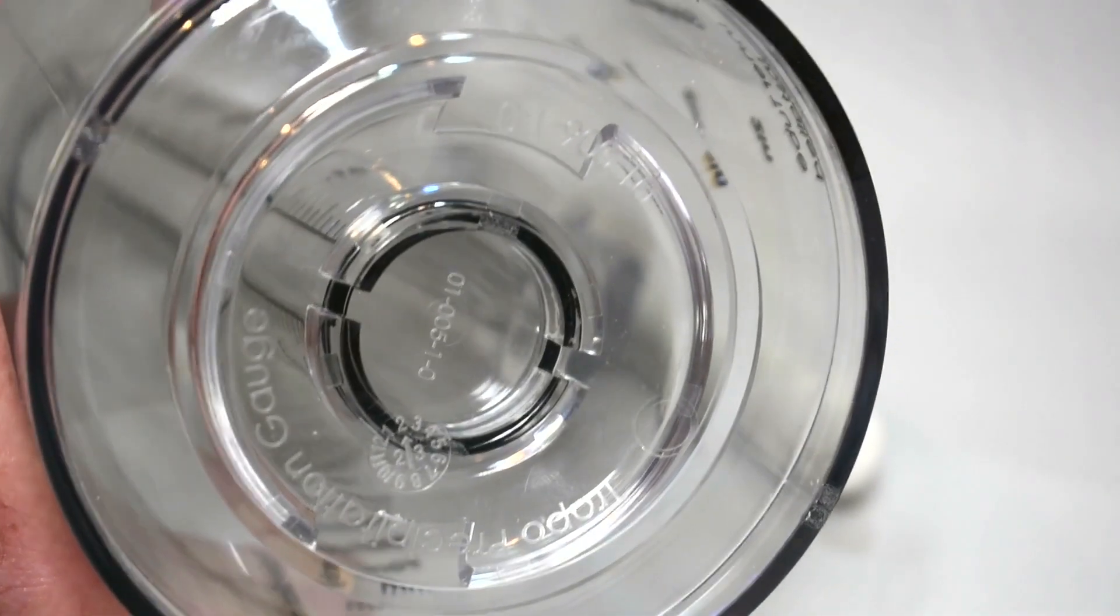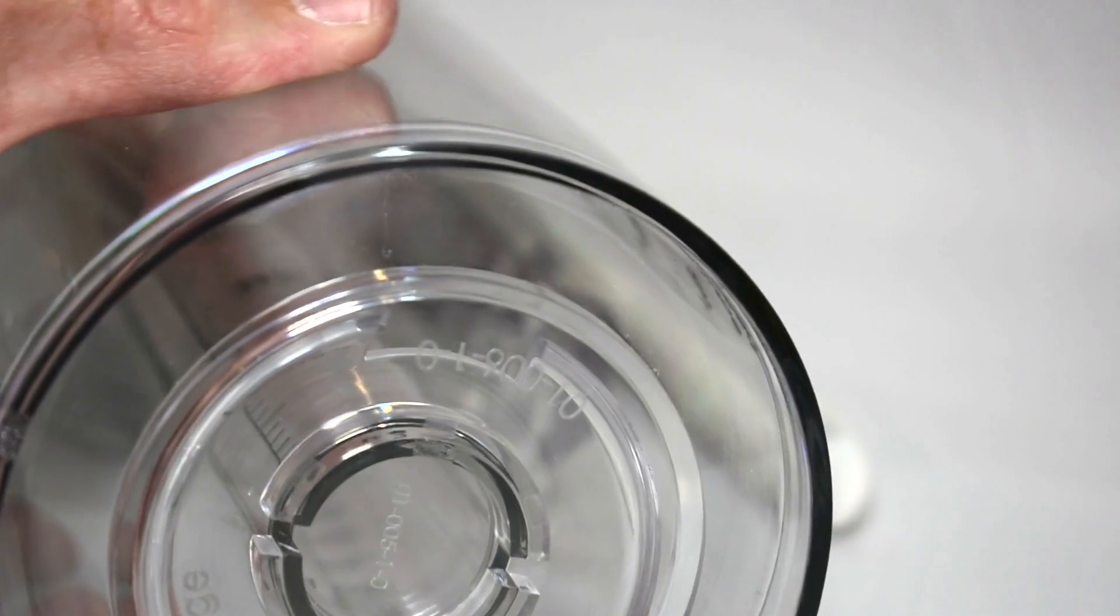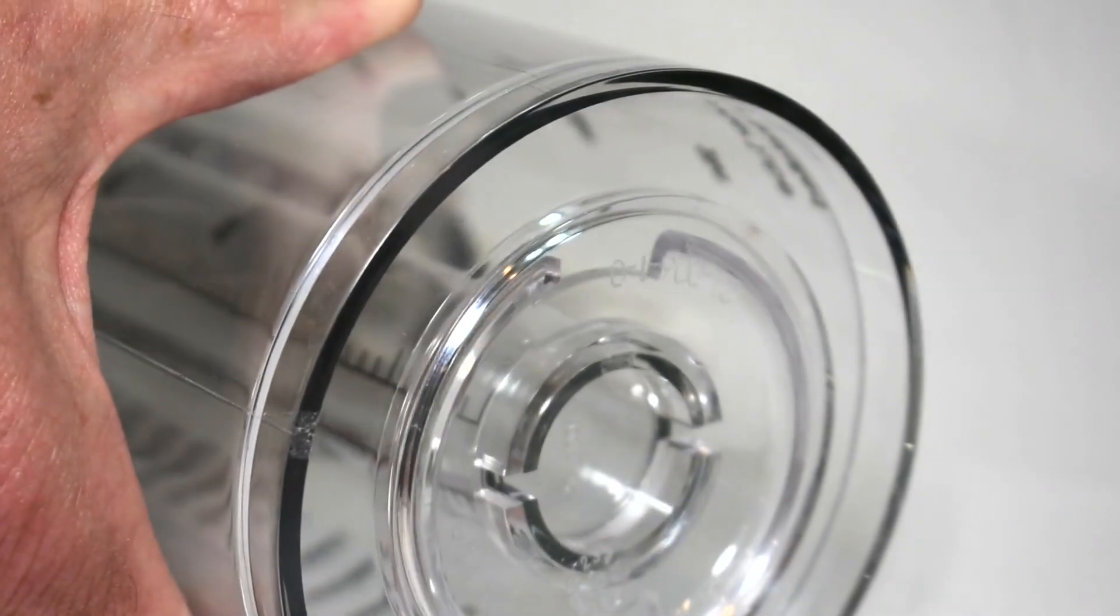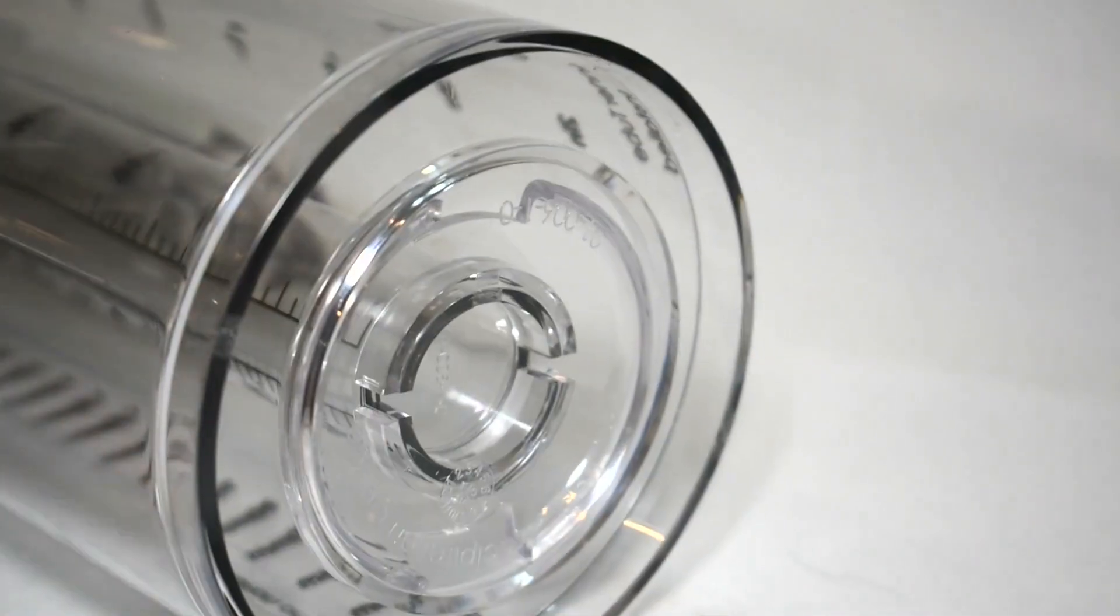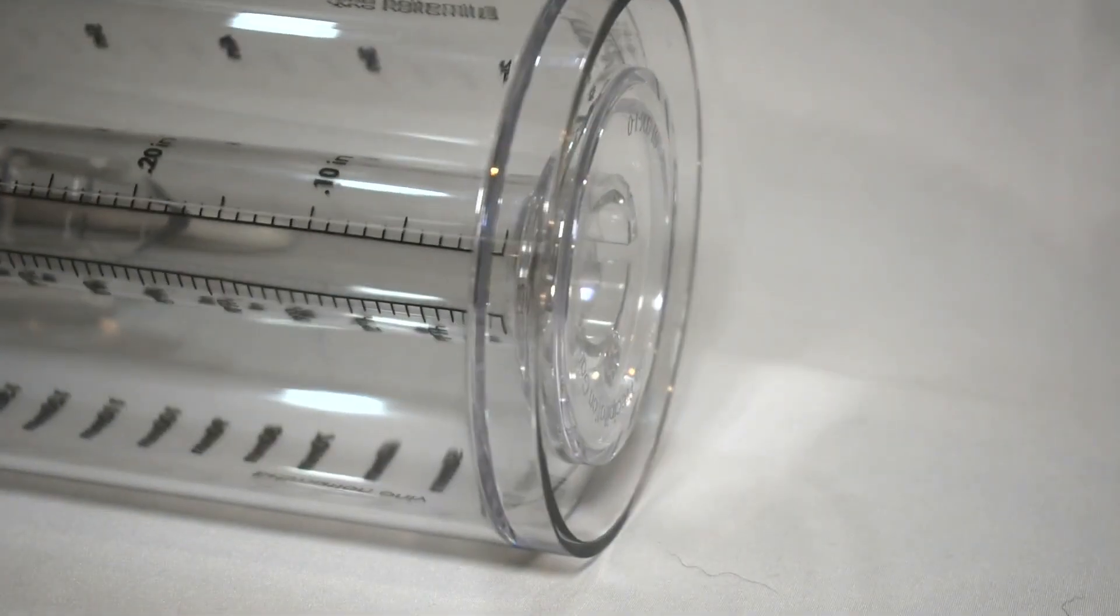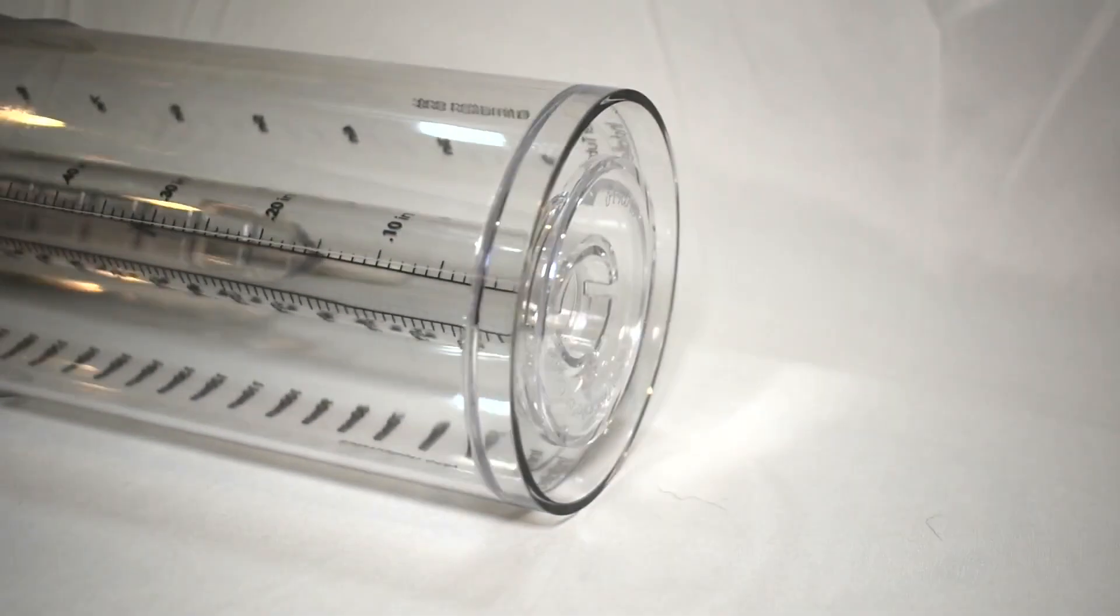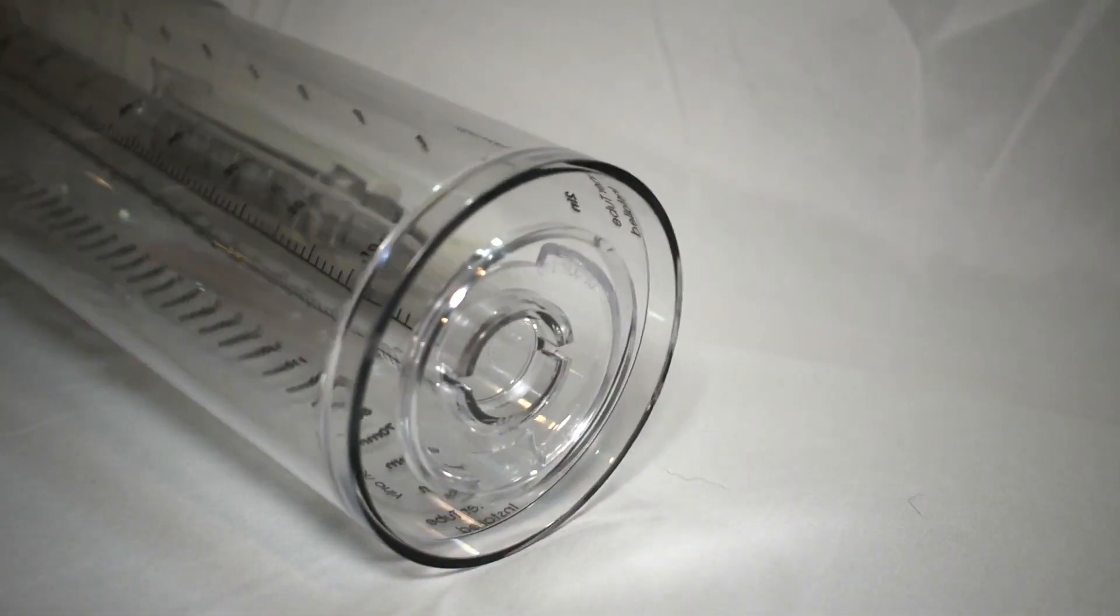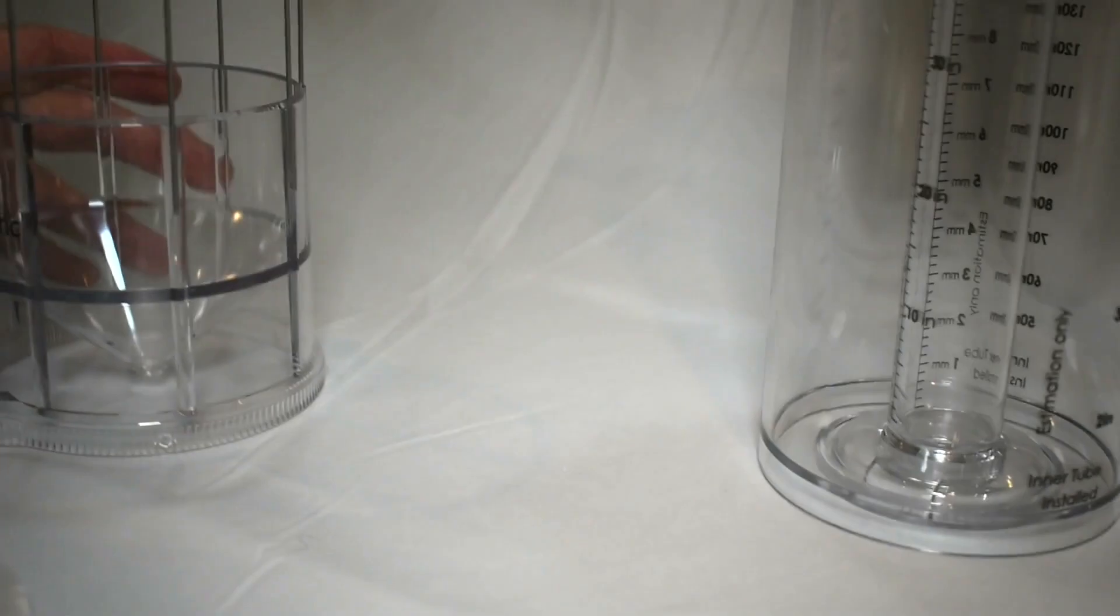Everything is stamped with a date, a month and a year that it was manufactured plus a part number. That allows us to provide better customer support and tracking of our product performance over time. It's also stamped with the Tropo precipitation gauge name on the bottom of the outer tube.